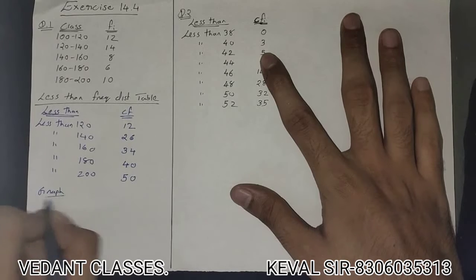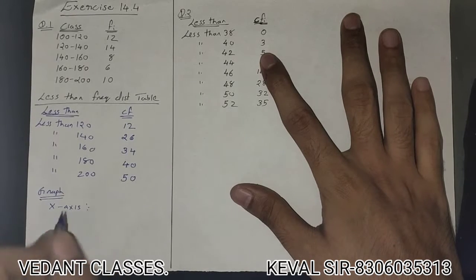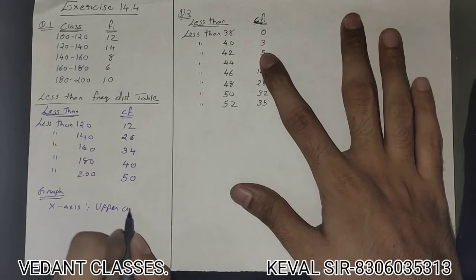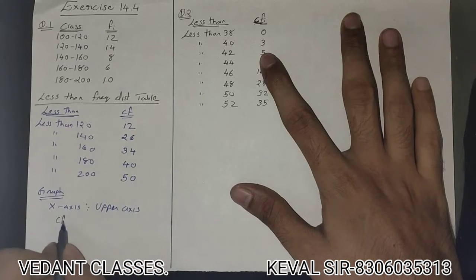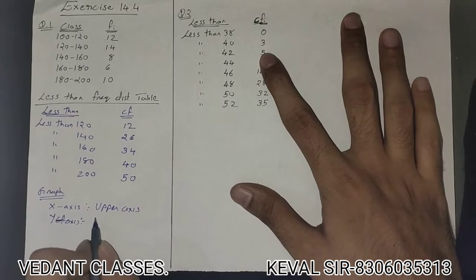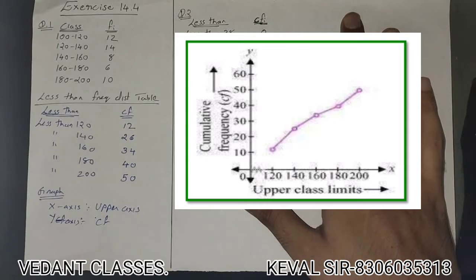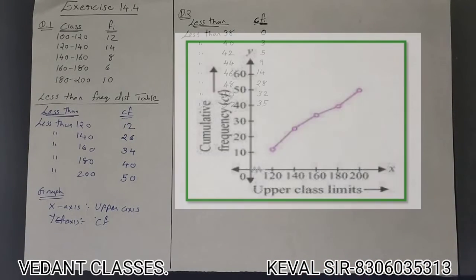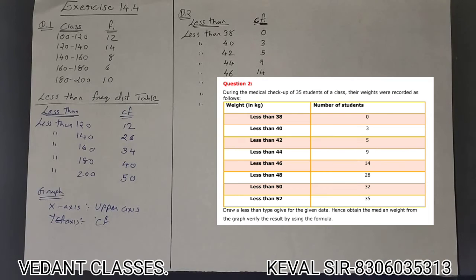For the graph, consider the upper limits on the x-axis and the cumulative frequency on the y-axis, and make the ogive as shown. Now let's move to question number two, where the less-than data is already given along with the cumulative frequency, and we need to draw the graph.